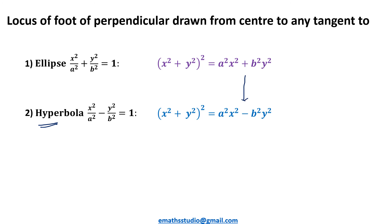The first one was derived earlier and that is for the ellipse. While for the hyperbola, there is only a small change — that is, instead of plus here, you have minus. So you can remember both these equations as standard results.